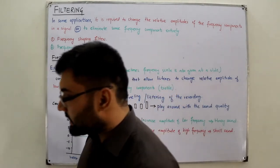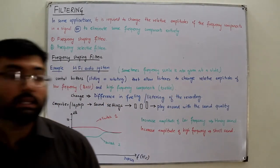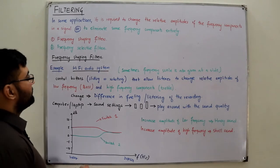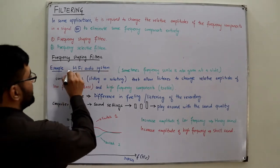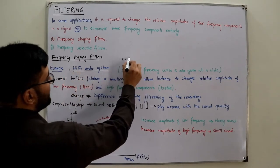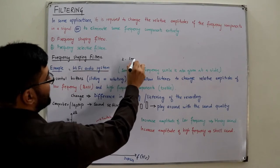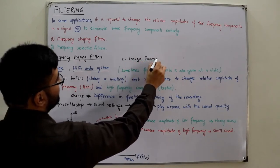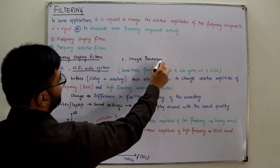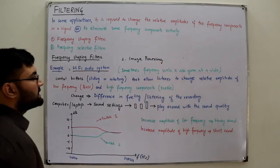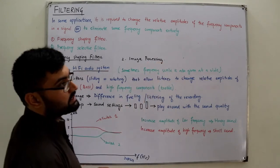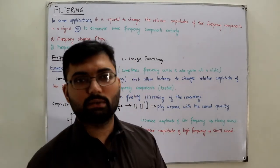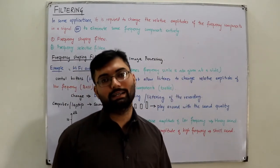That was the first example. The second example mentioned in the book is in the field of image processing — a two-dimensional black-and-white image where brightness varies over distance. You can read that from the book yourself.